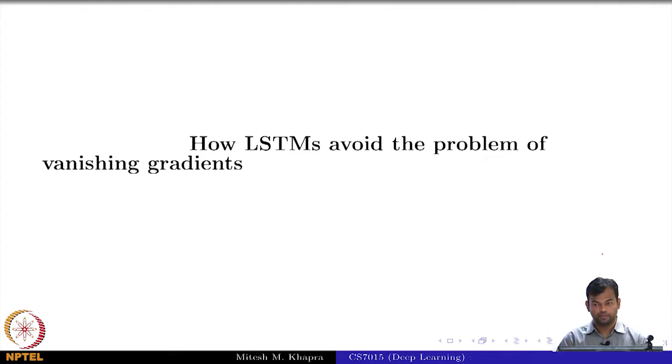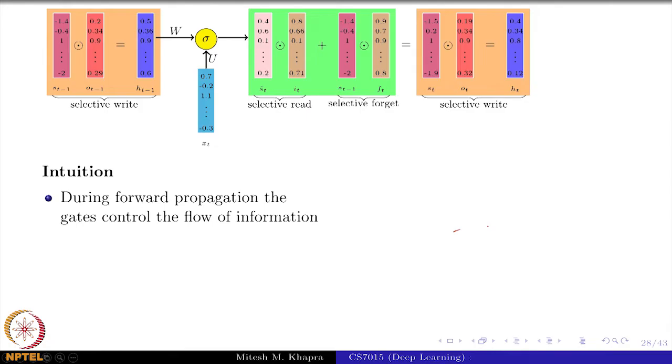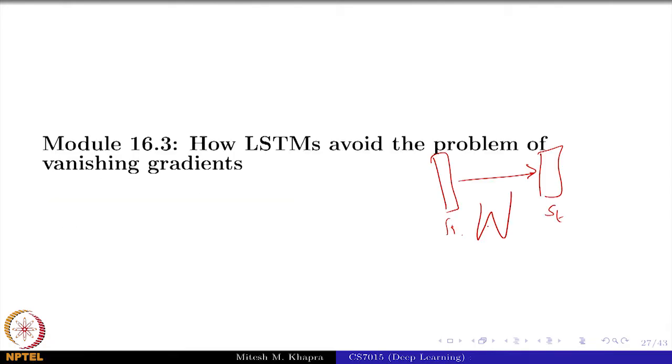We introduced a bunch of equations. Remember, in the case of RNNs the problem was because of the recurrent connections. Because you had these recurrent connections, this W which was the recurrent parameter connecting cell state ST minus 1 to cell state ST, this was repeatedly appearing in your gradients. That was causing the problem because then you had this multiplicative factor lambda into W raised to T. If the magnitude of W blows up, the whole thing will explode. If the magnitude of W vanishes, the whole thing will vanish.